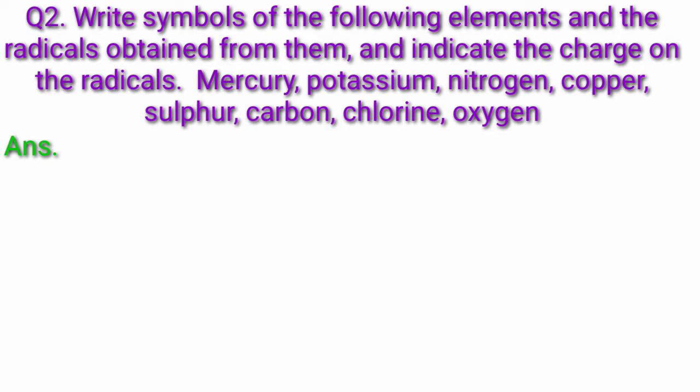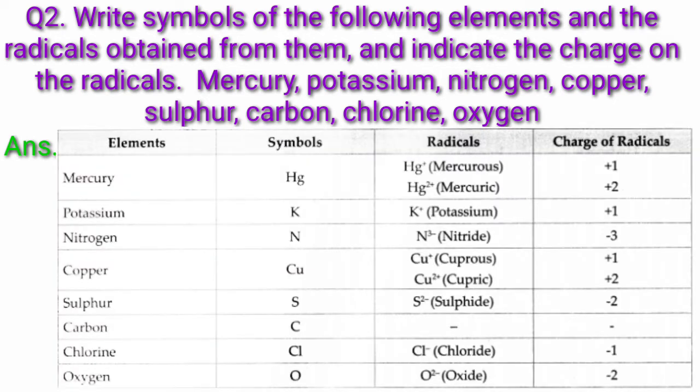Nitrogen — symbol N, radicals N3−, charge of radicals −3. Copper — symbol Cu, radicals Cu+, Cu2+, charge of radicals +1, +2. Sulfur — symbol S, radicals S2−, charge −2. Carbon — symbol C.